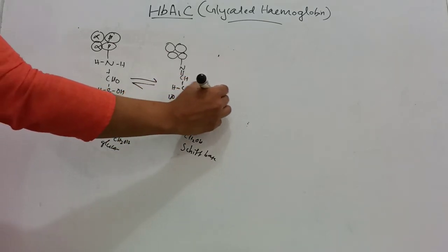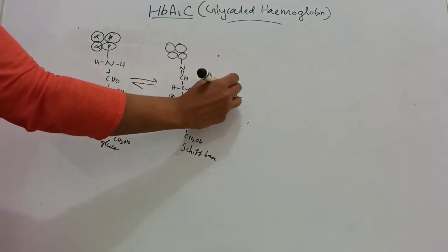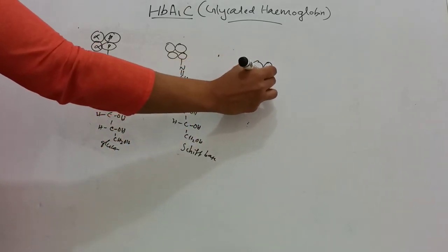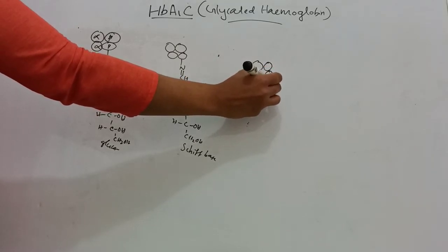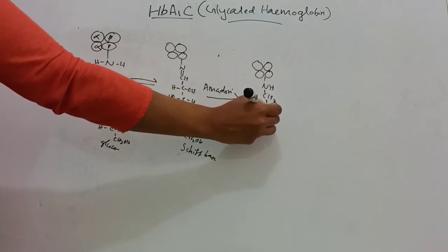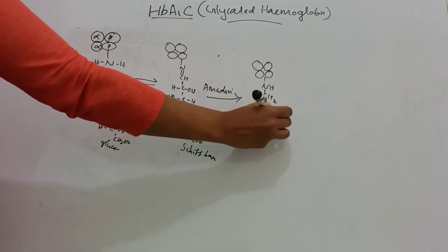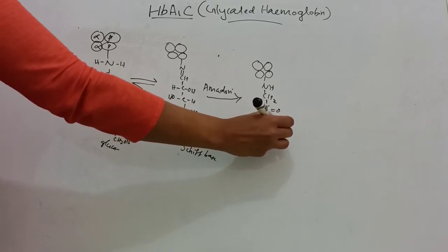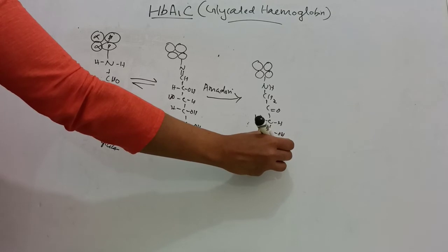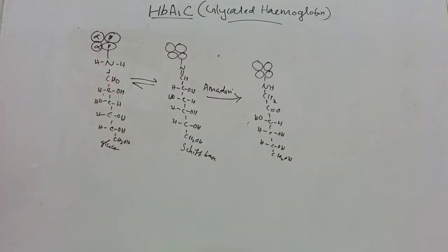Then there will be Amadori rearrangement, and it forms HbA1c: CH2C double bond O, CHOH, CHOH. And it is stable, and it is HbA1c.